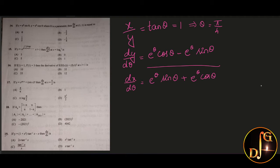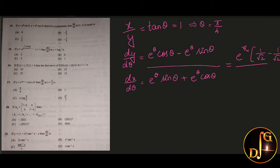At x, y equal to 1, that means θ equal to π/4. Substituting θ = π/4, e^(π/4) is common. The numerator becomes cos(π/4) minus sin(π/4), that is 1/√2 minus 1/√2, which is 0. Since the numerator is 0, the value is 0. Therefore, the answer is option A: 0.